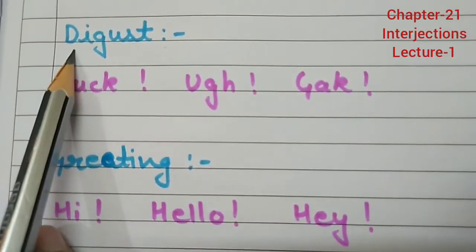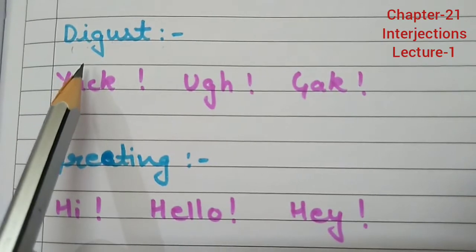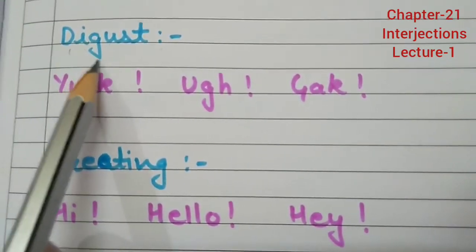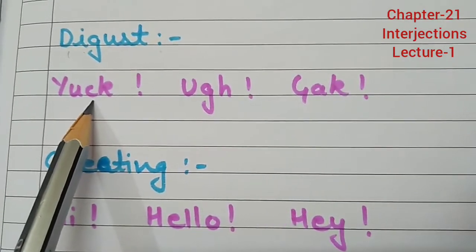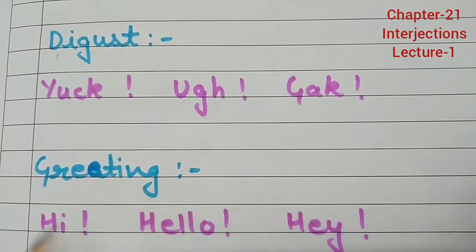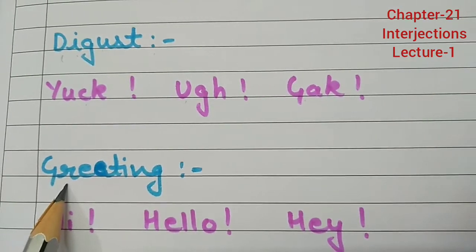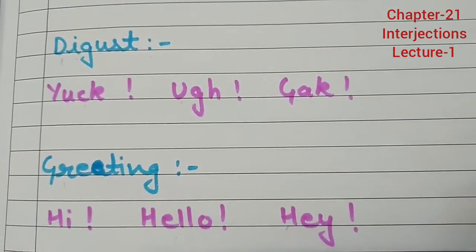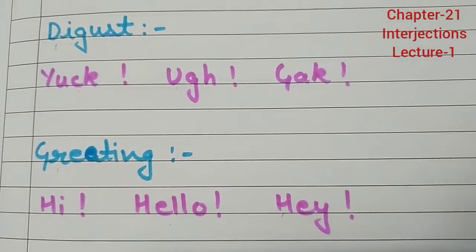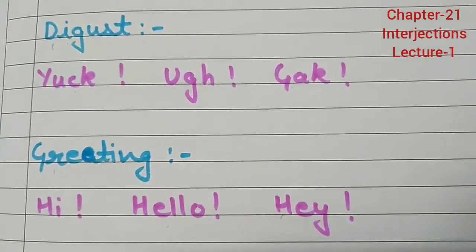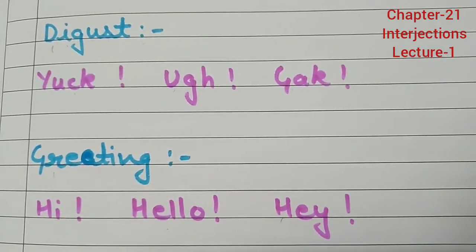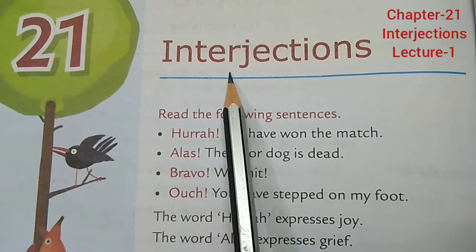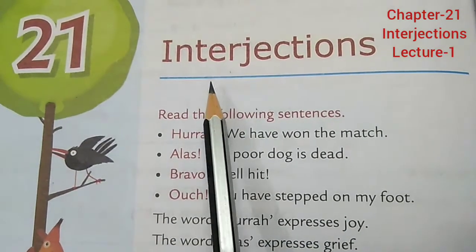For disgust — that is, for something revolting or unpleasant — you can use interjections like 'yak' or 'ugh.' For greetings, you can use 'hi,' 'hello,' 'hey.' So these are some examples. Now let's see this chapter in your book — please open page number 82. This is Chapter 21 and the chapter name is Interjections.